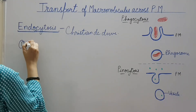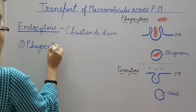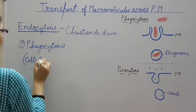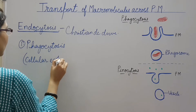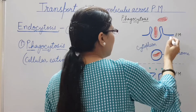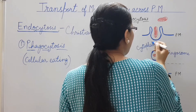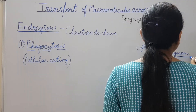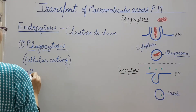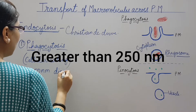Endocytosis is of two types. First is phagocytosis, also known as cellular eating. In this, large particles that are present outside the cell are internalized by the cell. The plasma membrane invaginates and an endocytic vesicle is formed that is released in the cytoplasm. This endocytic vesicle is known as phagosome, with a diameter of 250 nanometers.